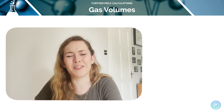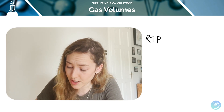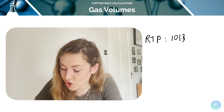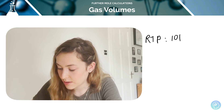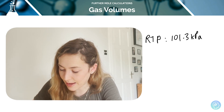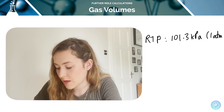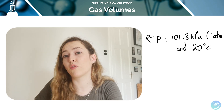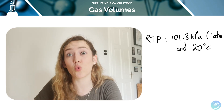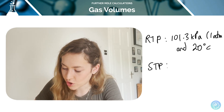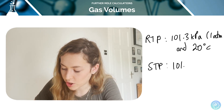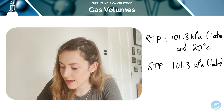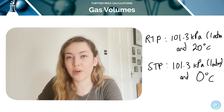RTP is room temperature and pressure: 101.3 kilopascals, which is the same as one atmosphere, and 20 degrees Celsius. You need to learn that — we often think of room temperature as around 21 or 22 degrees, but it's defined as 20. Standard temperature and pressure (STP) is the same pressure, 101.3 kPa or one atmosphere, but at zero degrees Celsius.